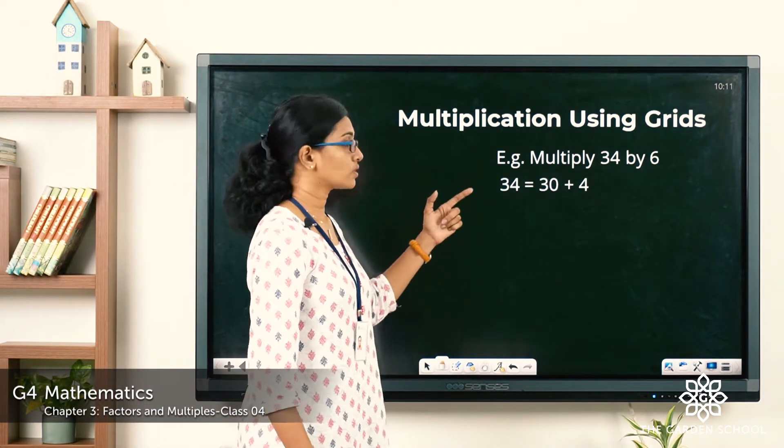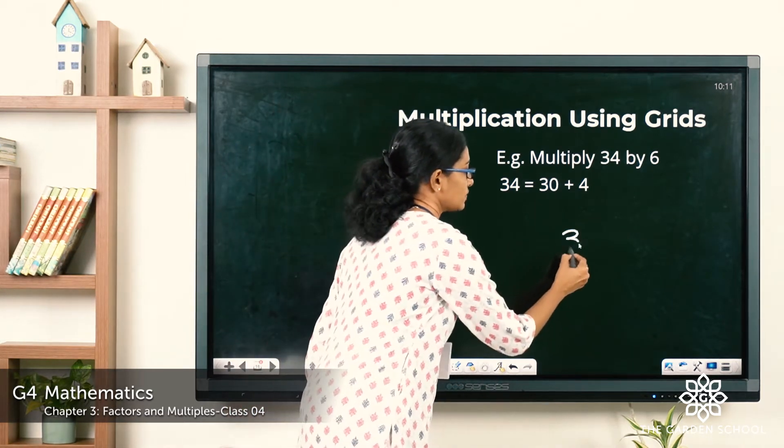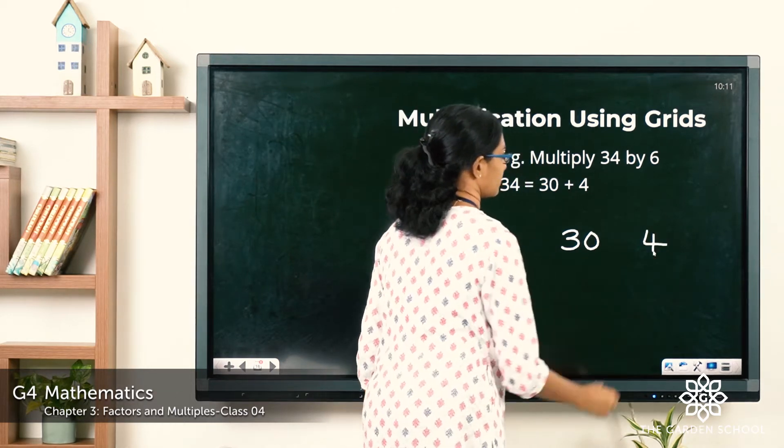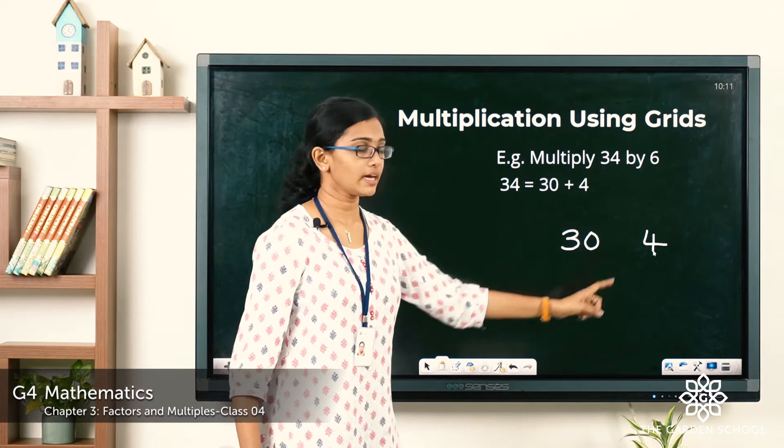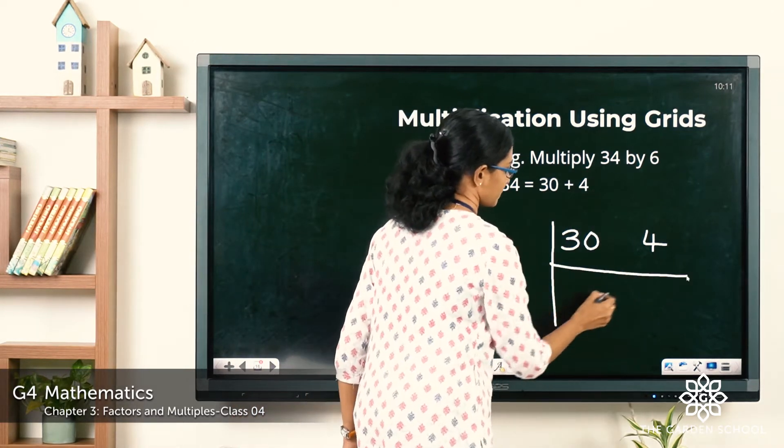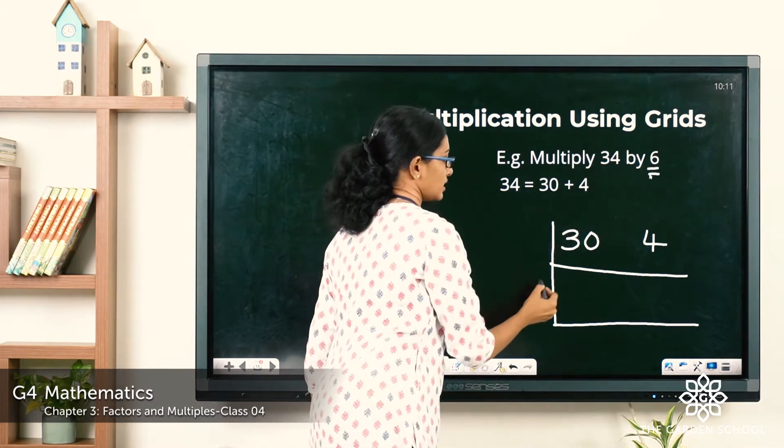Now 34 is equal to 30 plus 4. I'm going to write this 34 as 30 plus 4 in this way. I've written 30 here, I left a space, I wrote 4 there. Then I'm going to draw a grid and I'm going to write this 6 here.